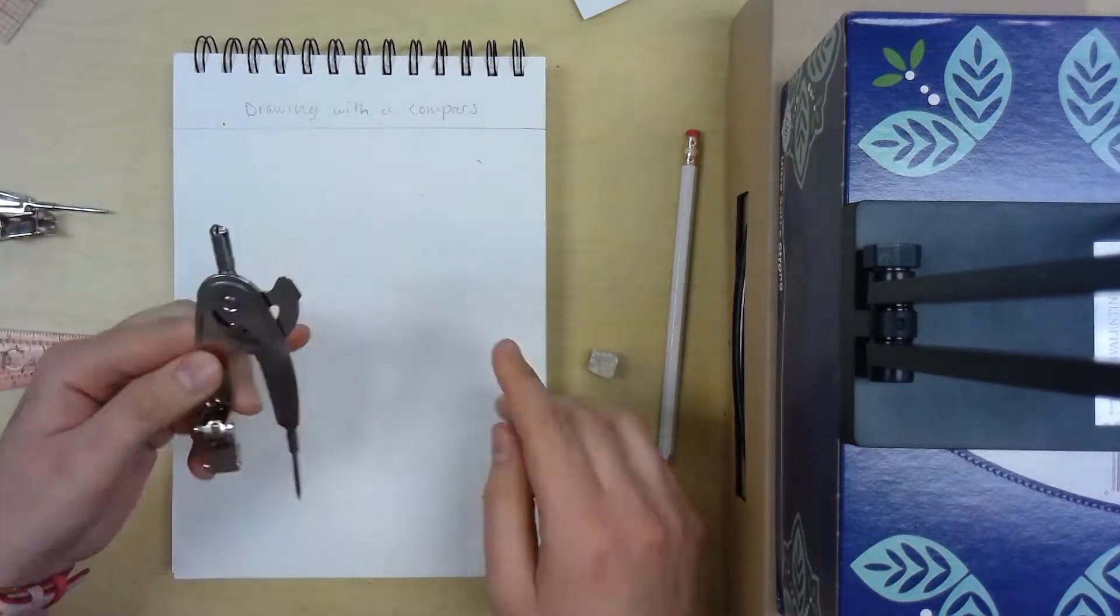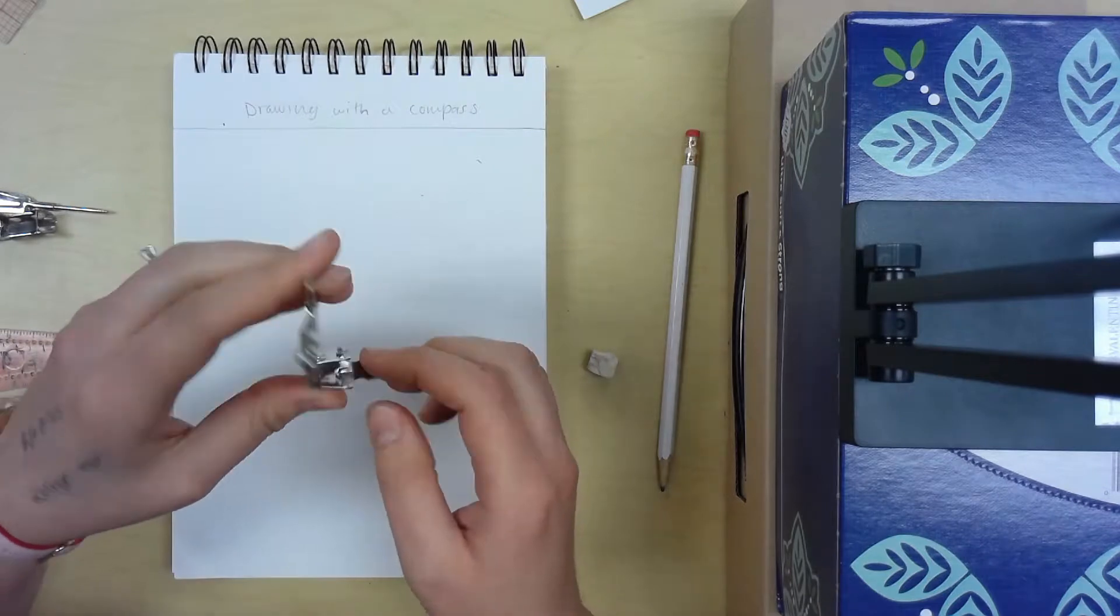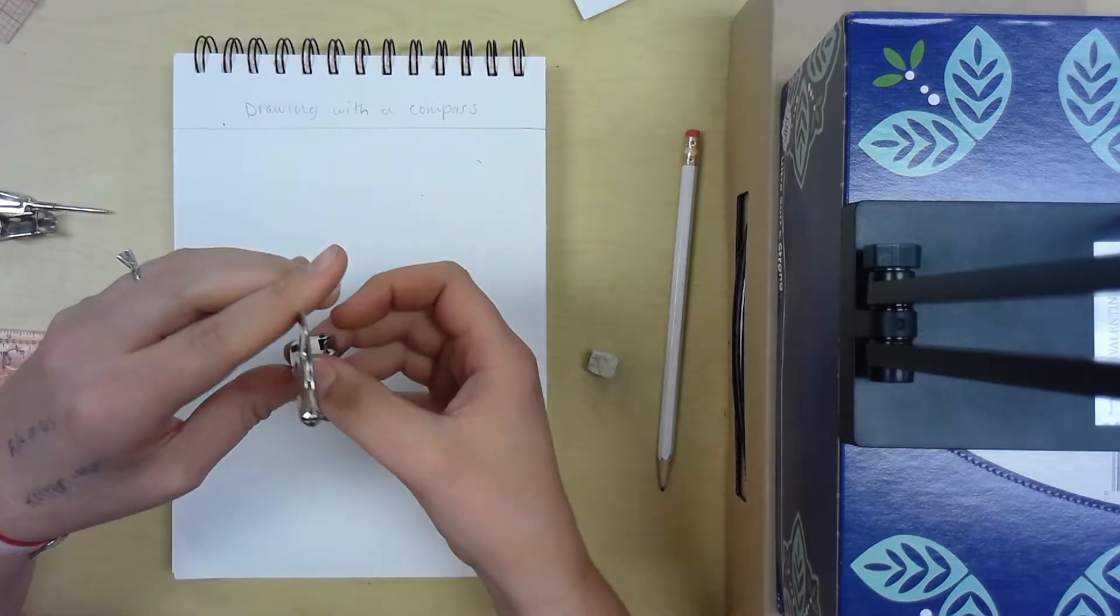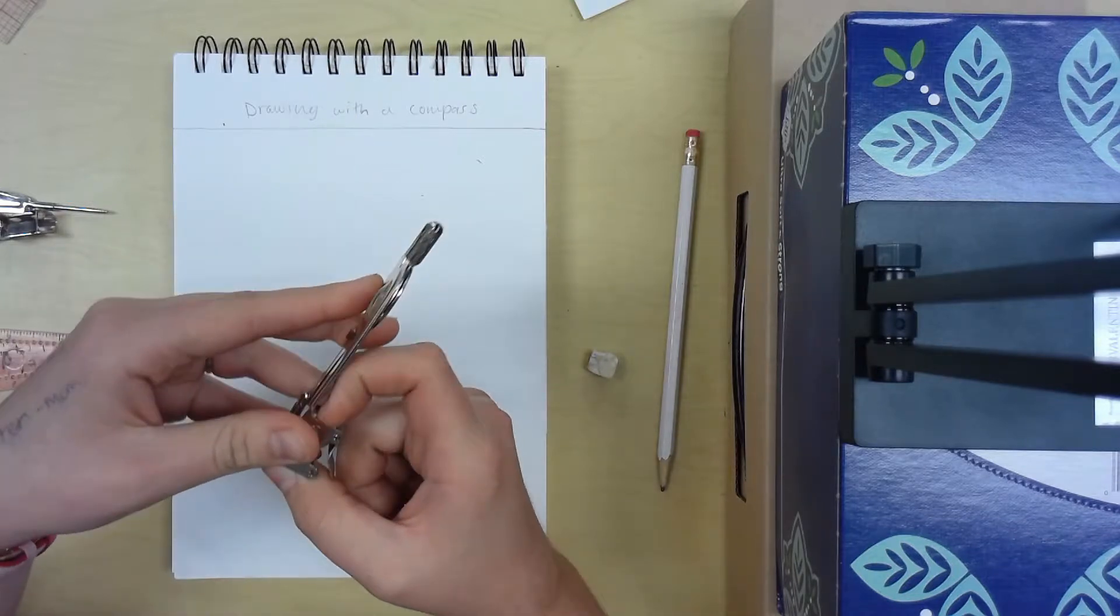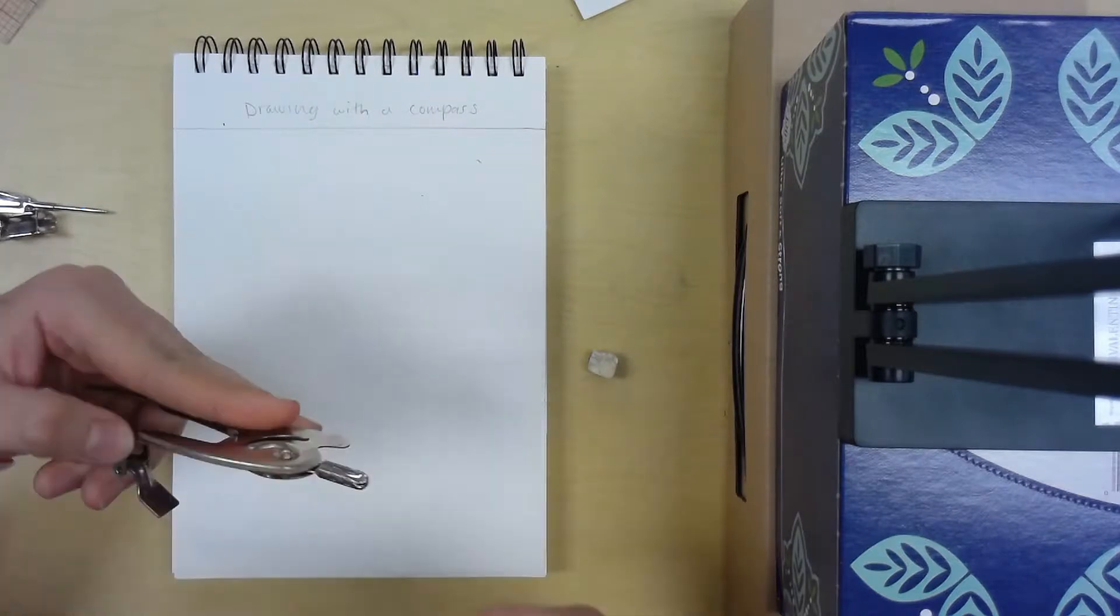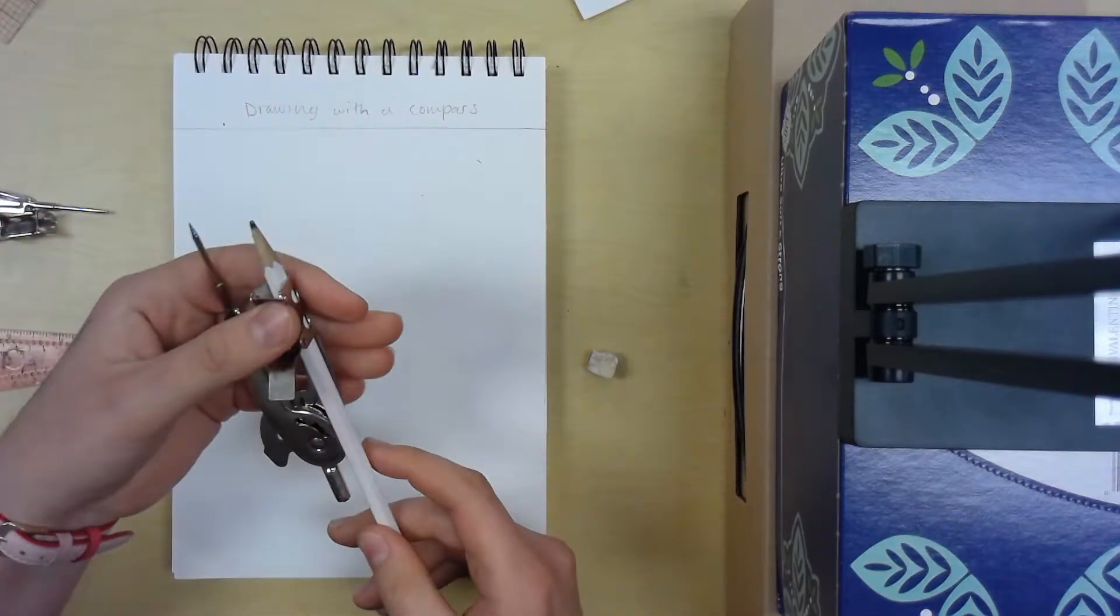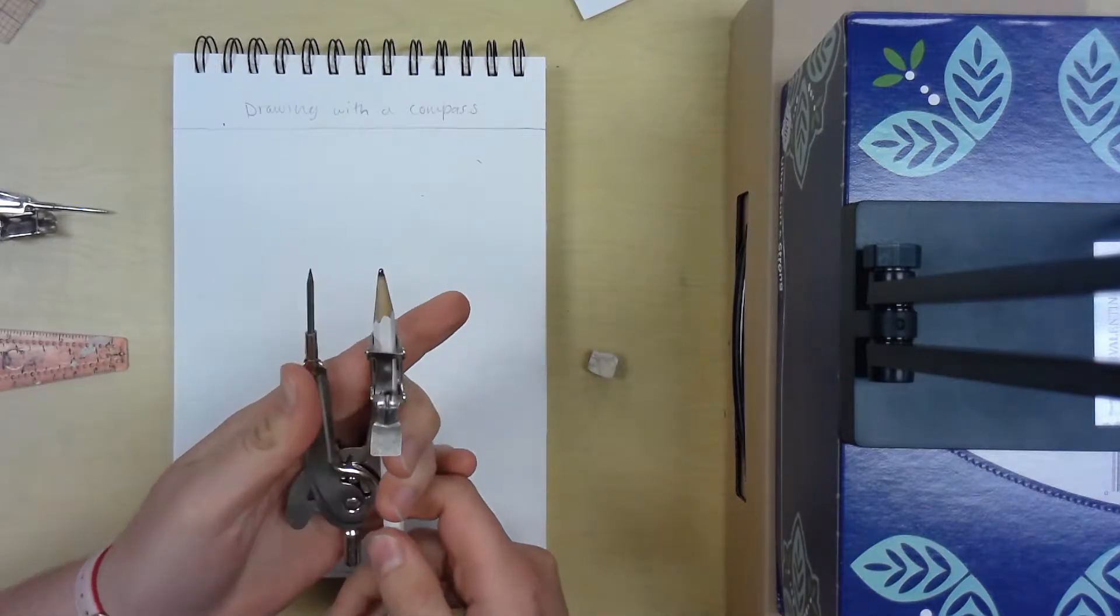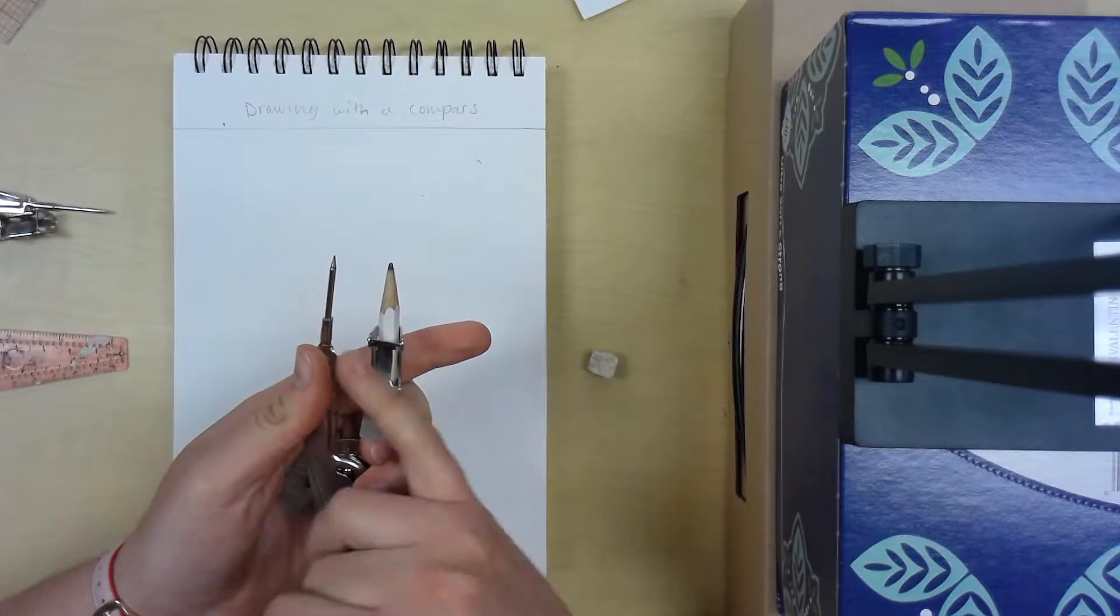Right here there's like a little slot. That's where you put a pencil. Just like when you draw anything, you always want to start out in pencil so you don't mess up, and then you won't ruin a piece of paper because you can just erase it.